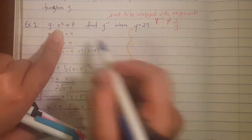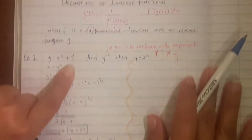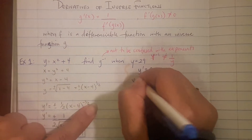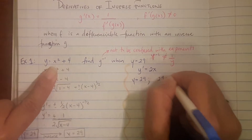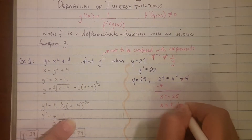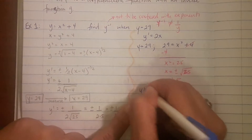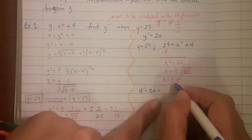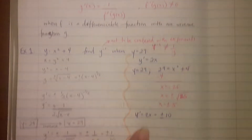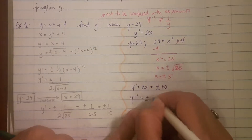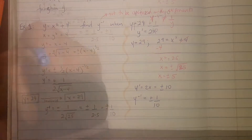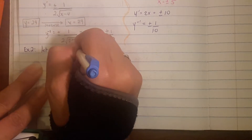Now using the shortcut — it's a lot faster. All it is: take the derivative of the function, which gives 2x. When y equals 29 in the original function, set 29 equals x squared plus 4, subtract 4, then take the square root: x is plus or minus 5. Plug that back into the derivative, so the derivative at that point is plus or minus 10. Using the shortcut, the derivative of the inverse function is 1 over the derivative of the regular function, giving 1 over plus or minus 10.